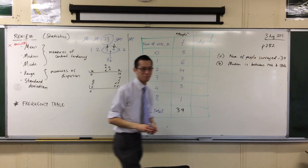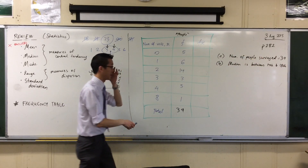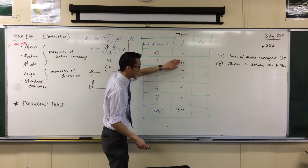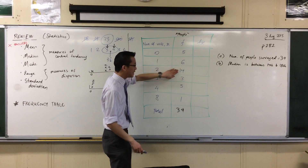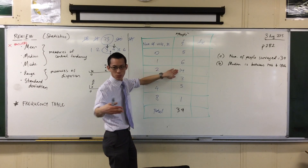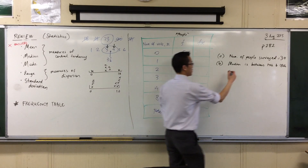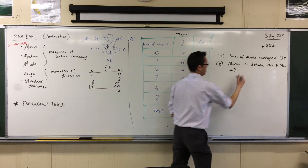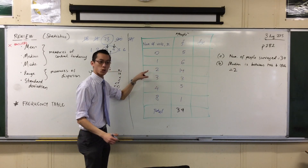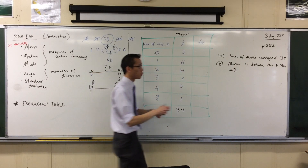So now I can count. I don't have to worry about crossing out or anything. There's 5 people at 0 visits, then 11 at 1 visit. Clearly the 17th score is going to be in the next group, as we kind of anticipated. So the 17th and 18th scores are both going to be here on 2. The median is 2.